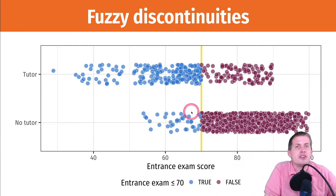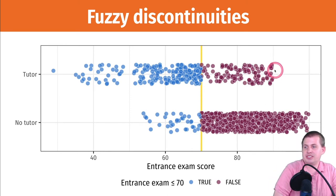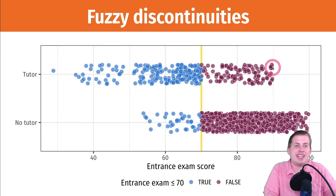But often what we have are issues with compliance, where if you look at this plot here, there are people who scored fairly high that still got a tutor. There's this person here scored like a 90 and they still got a tutor. So they didn't really comply with the program. There are also people down here that scored like a 60 or a 55, who were supposed to get a tutor but they did not.